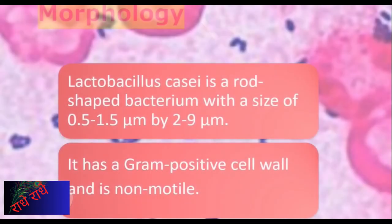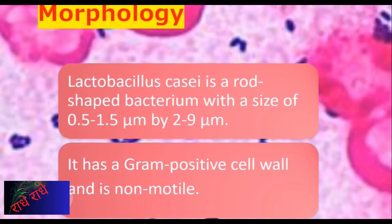Lactobacillus casei is a rod-shaped bacterium with a size ranging from 0.5 to 1.5 micrometers in width and 2 to 9 micrometers in length. Its cell wall is gram-positive and is non-motile. This bacterium is commonly found in many human and animal habitats and is known for its probiotic properties, which are often used in fermented food products.